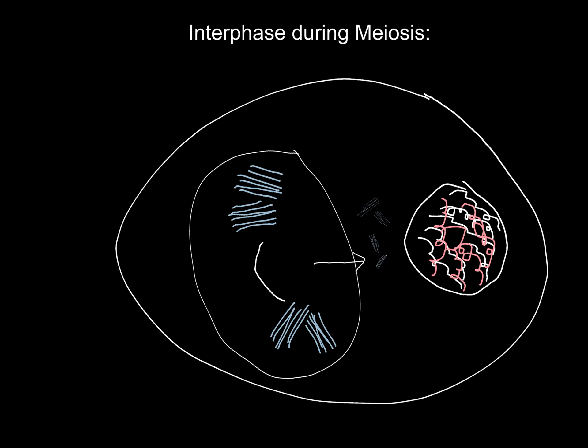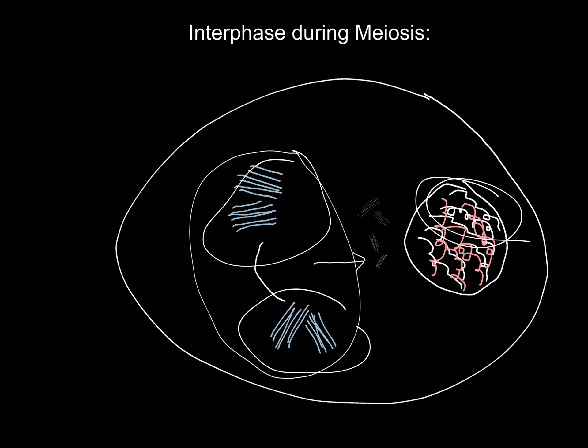Interphase is what prepares for prophase one. During the G1 phase, the cell grows, proteins and organelles develop based on DNA. During the S phase of interphase, the DNA is replicated, as you can see right here, and it will produce two copies of its chromosomes called sister chromatids.